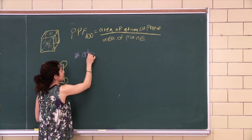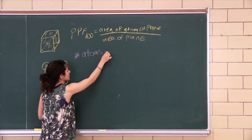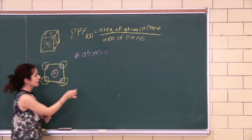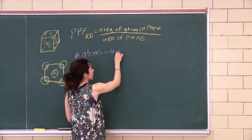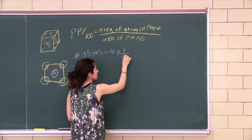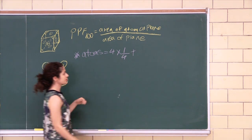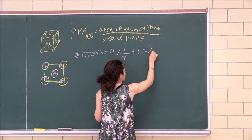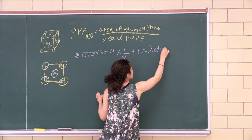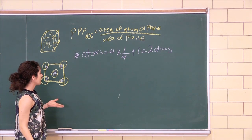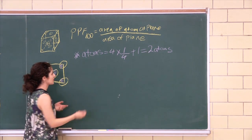So over here we're going to calculate the number of atoms on this plane. We have 1, 2, 3, 4 times a quarter of the atoms plus a whole one in the center, giving us 2 atoms. And that's all there is to this one. The rest is all math.